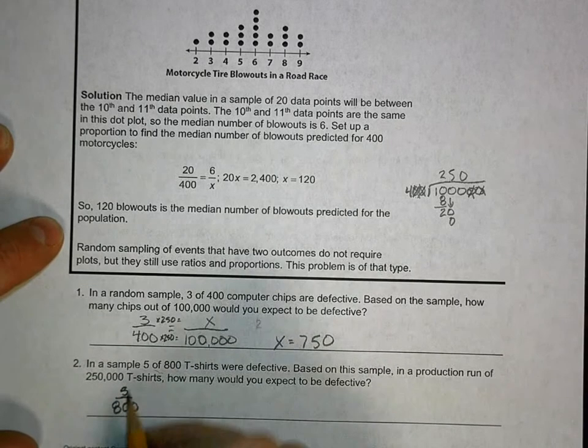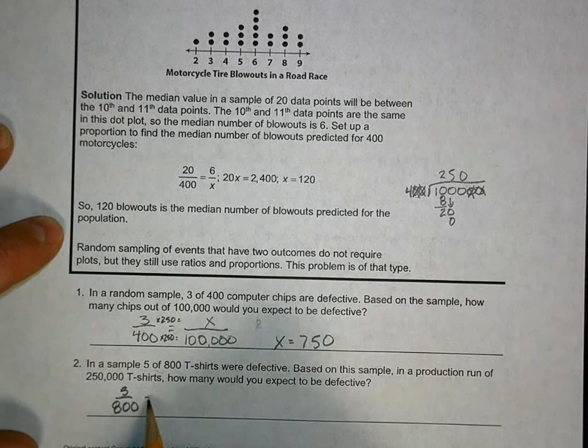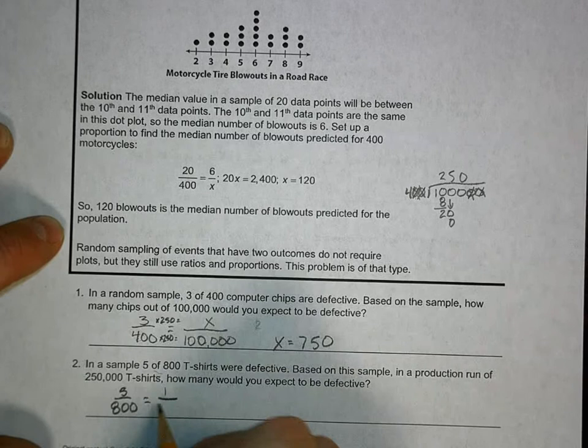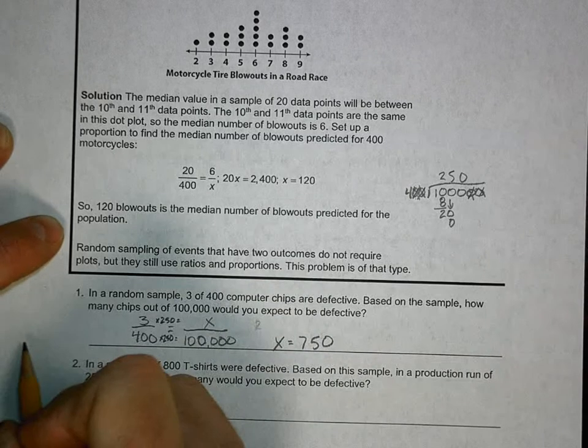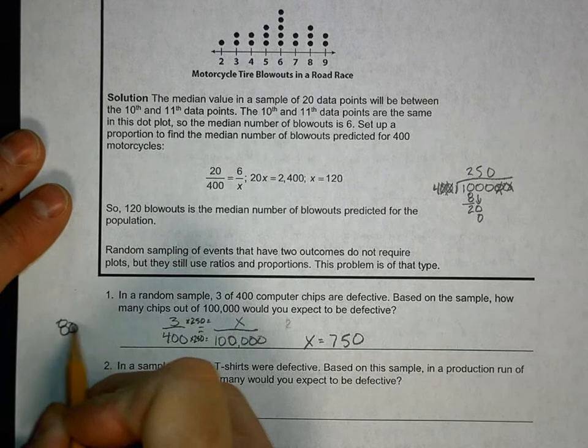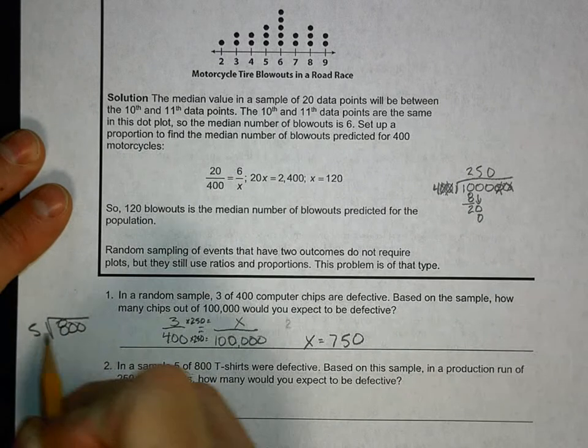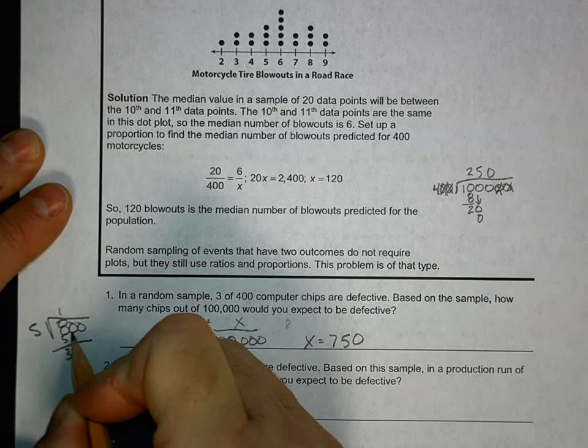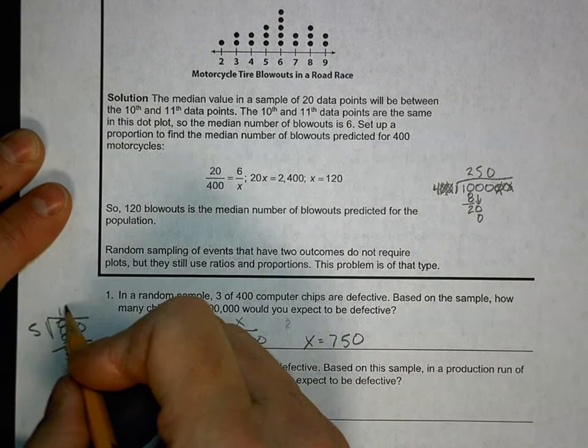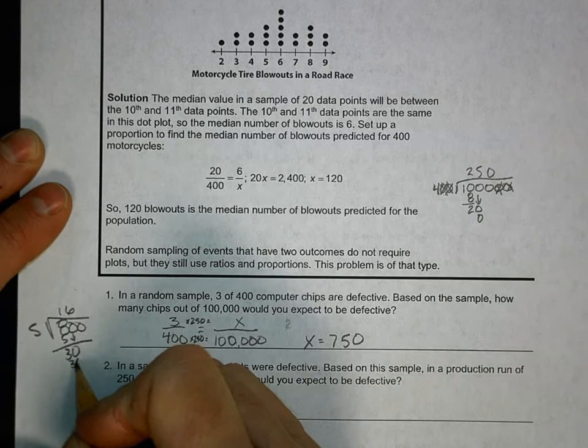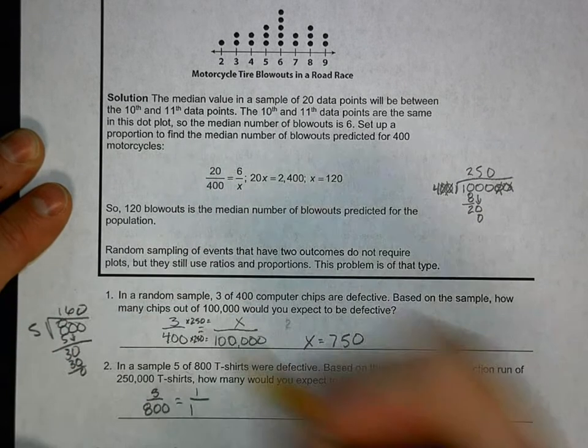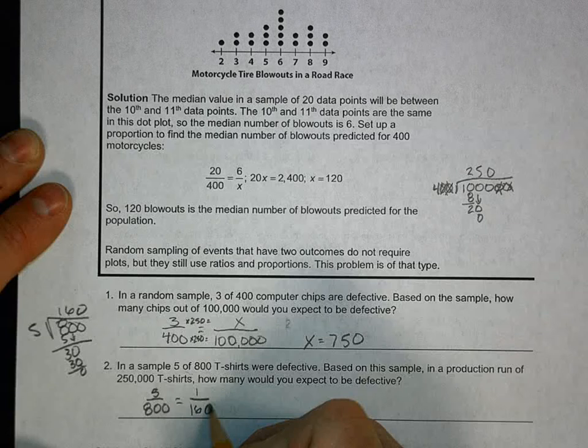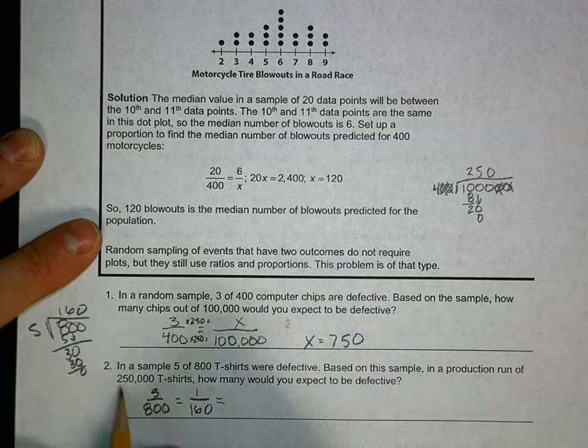I can simplify this because 5 will go into both. I'm definitely going to simplify it to 1 and divide 800 by 5. 5 goes into 8 once, that's 3, bring down the zero, 5 goes into 30 six times, that gives zero. So I got 160. So 1 over 160, and I want that to equal something over 250,000.